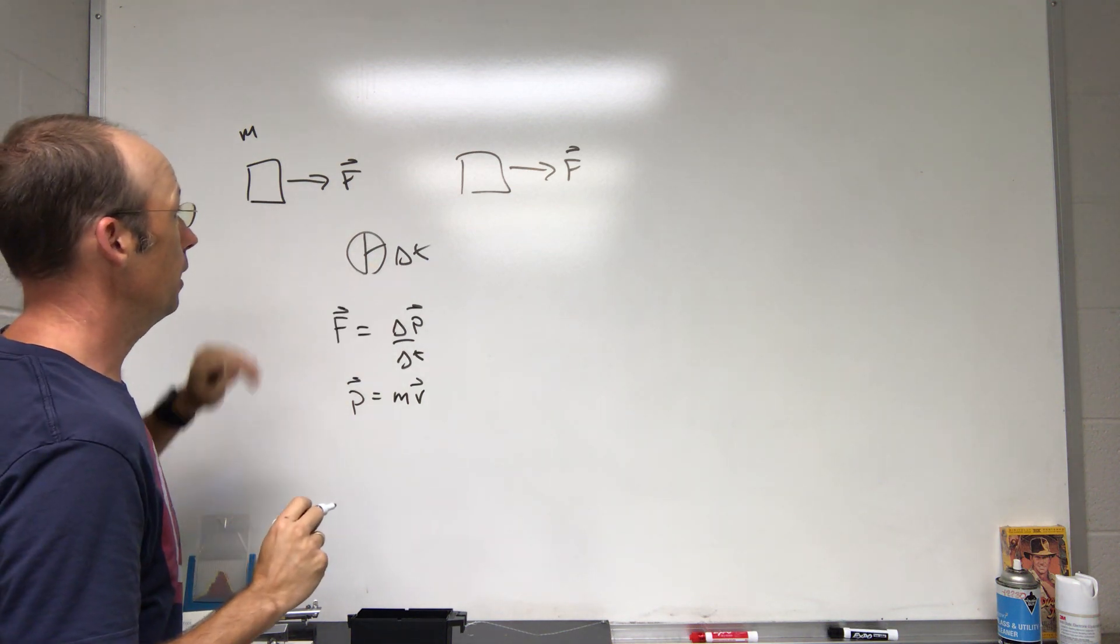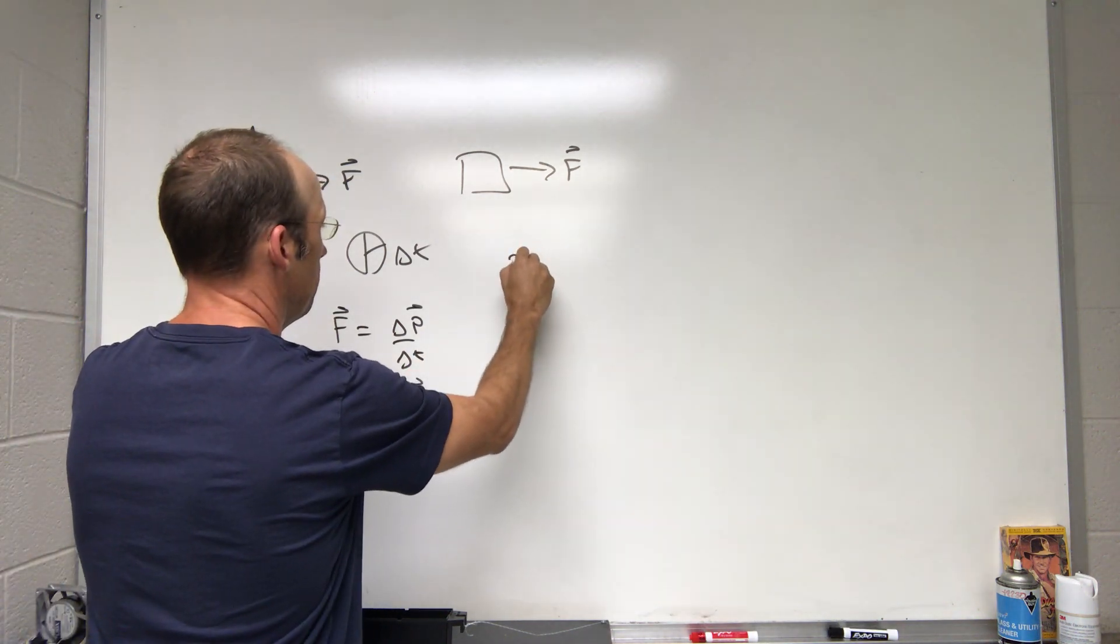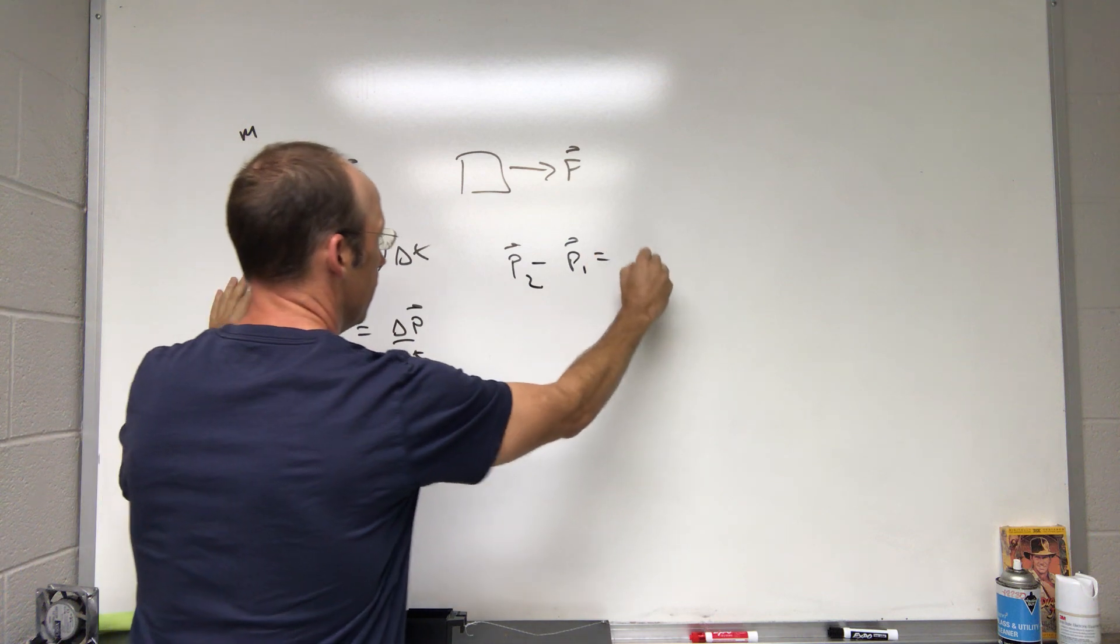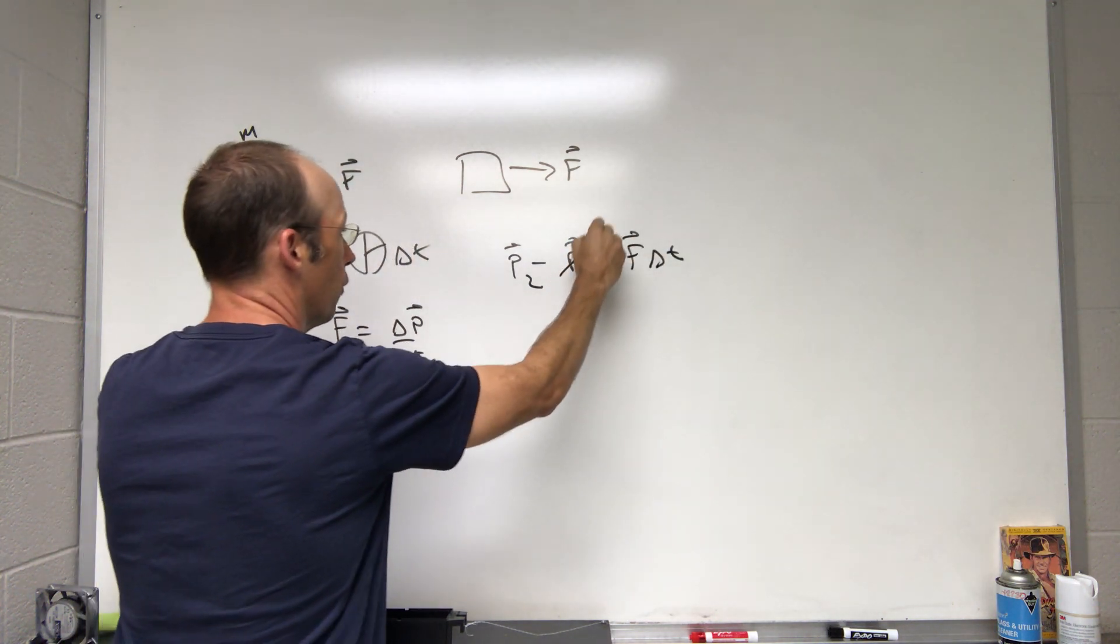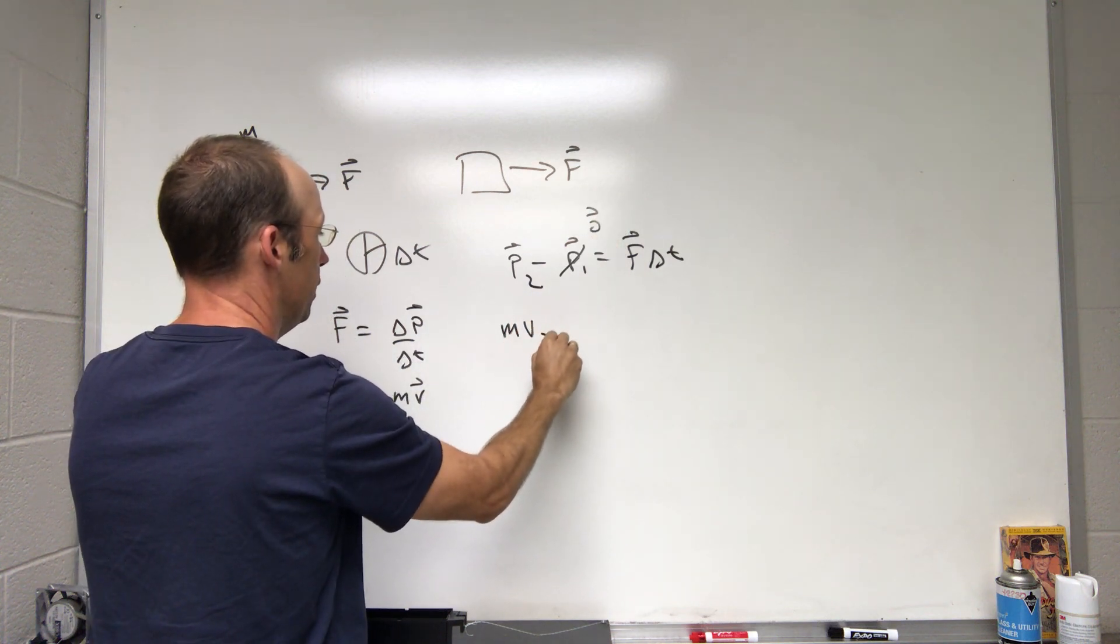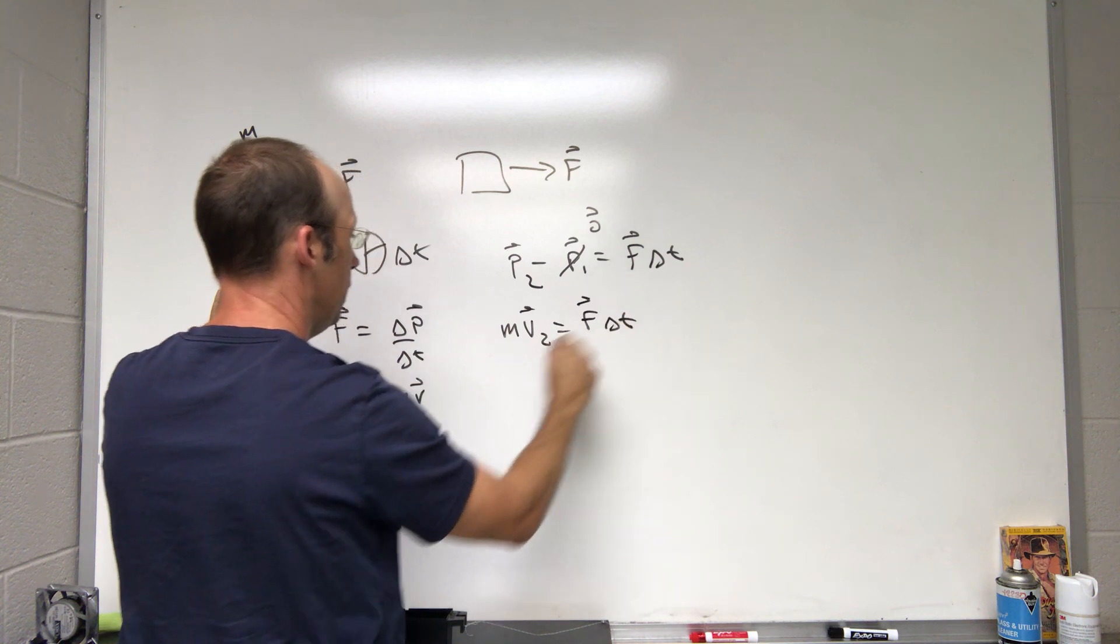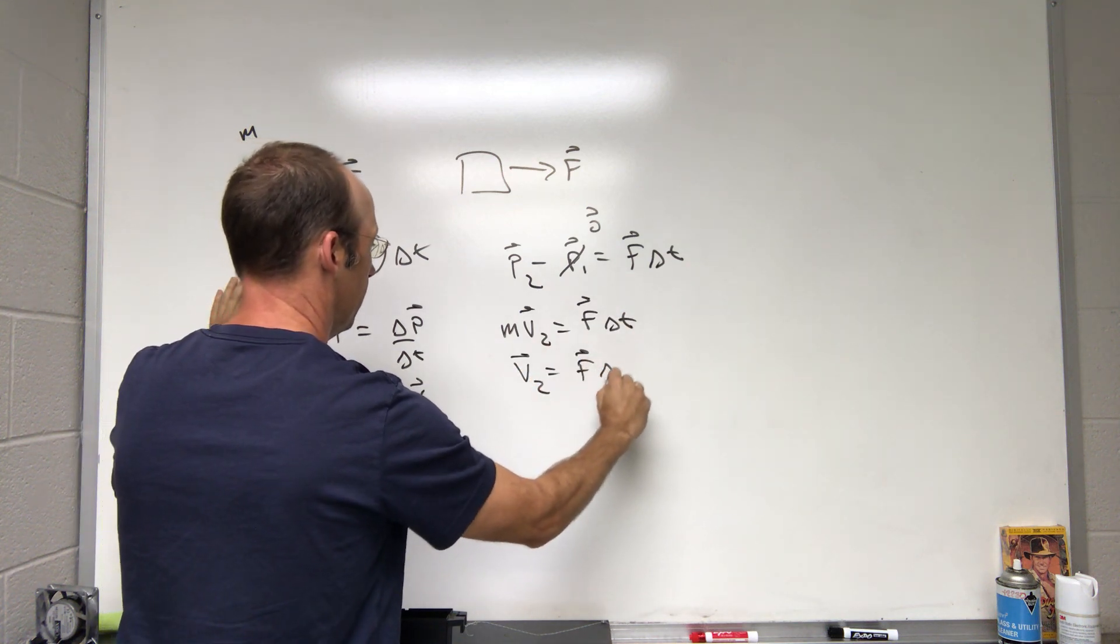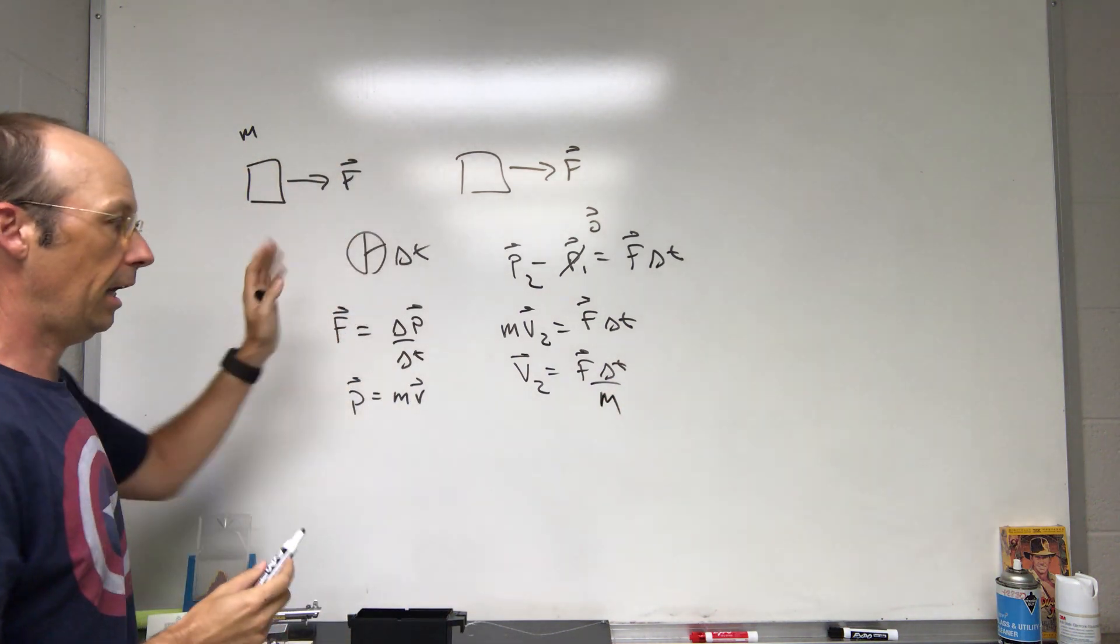So if this starts from rest and goes through some time Delta T, let's calculate the final velocity. P 2 minus P 1, that's Delta P, equals F Delta T. P 1 is zero vector, so I get M V 2 equals F Delta T.